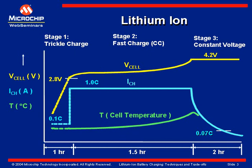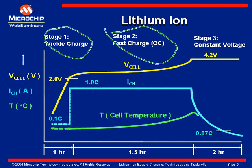The preferred charge algorithm for lithium-ion battery chemistries is a constant current, constant voltage algorithm that can be broken down into three stages: stage one, the trickle charge; stage two, the fast or bulk charge; and stage three, the constant voltage charge.